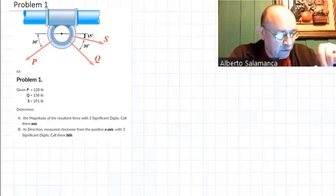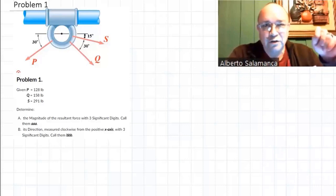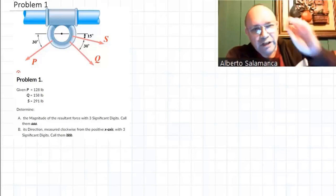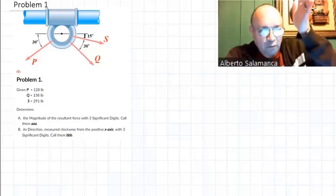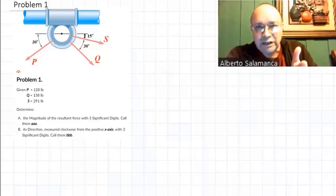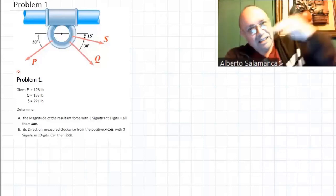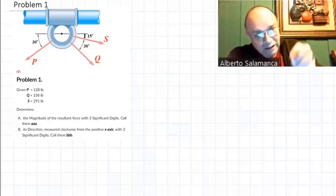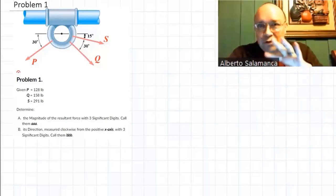In this problem it's very easy because it's 2D, so you have to get the components in the X and Y direction. Once you have the components in the X and Y direction, you just add all the components in the X direction, then all the components in the Y direction, and those summations are the components of the resultant.